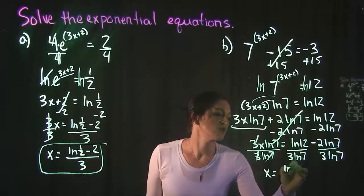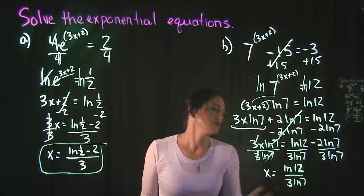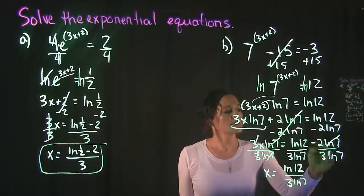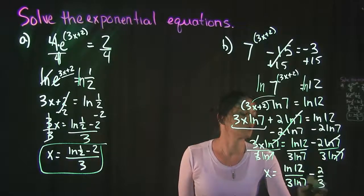So we have ln 12 over 3 ln 7. Over here, the ln 7s can cancel out, leaving us with minus 2/3.